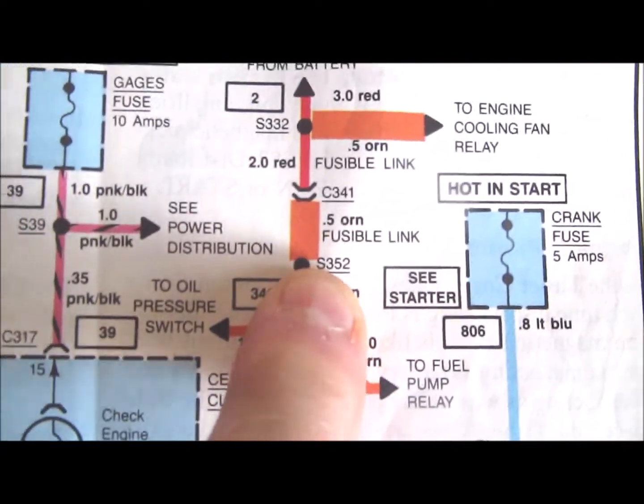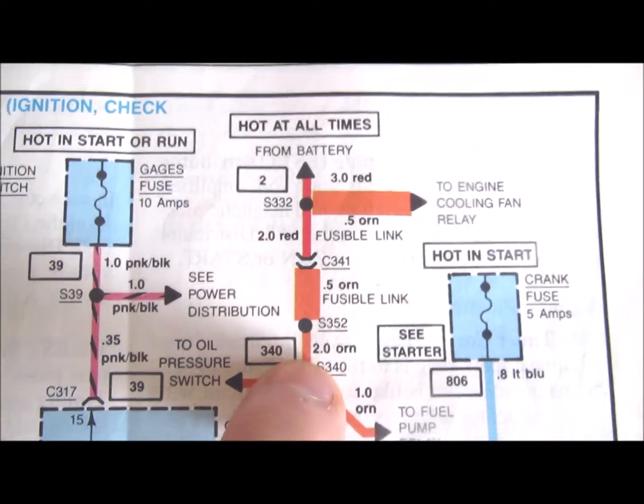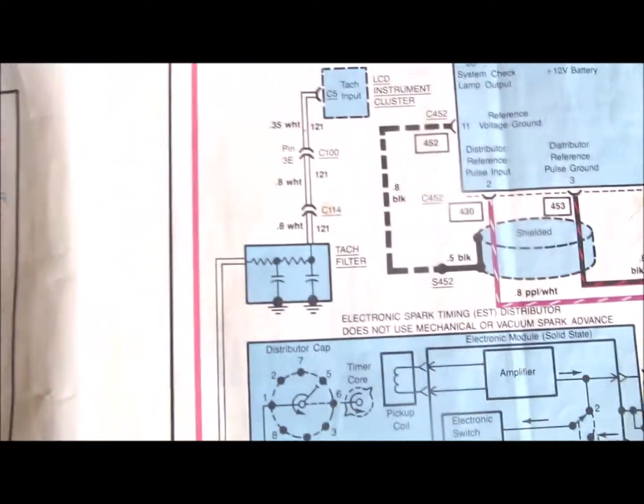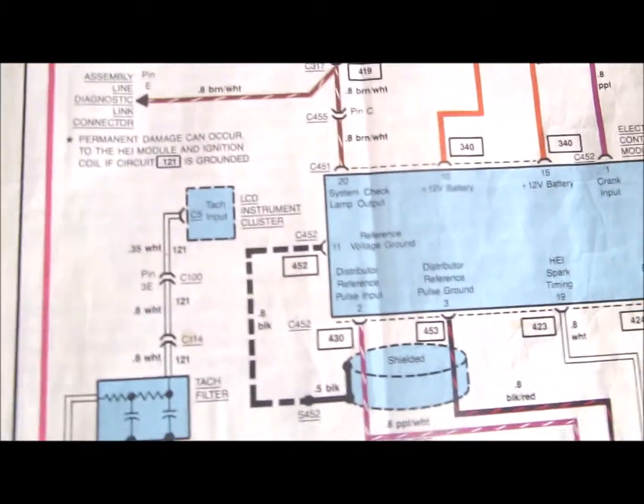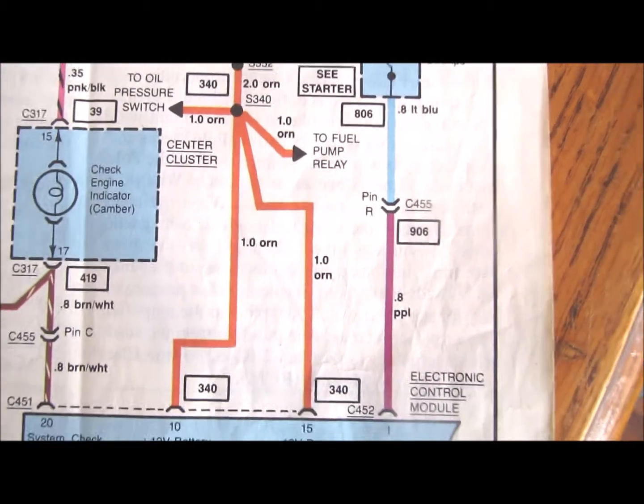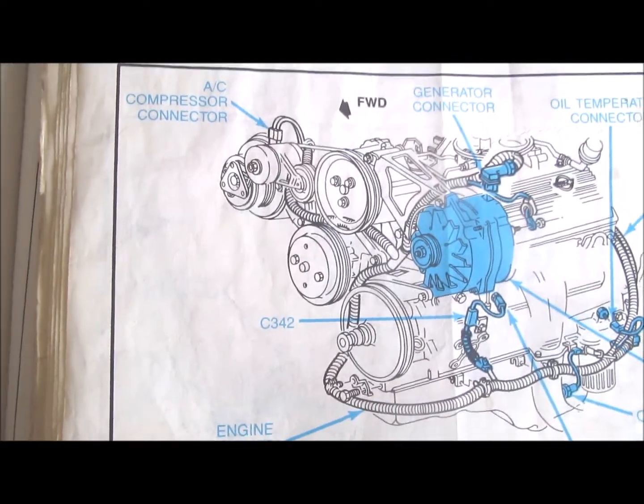So if you bypass this fusible link and just put a wire in there, if anything goes wrong inside the car, particularly with the electronic control module, that's where you're going to have a fire situation. But I'll go out to the car and show you the fusible link on the car.